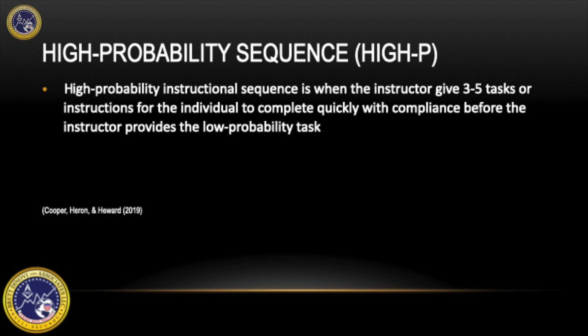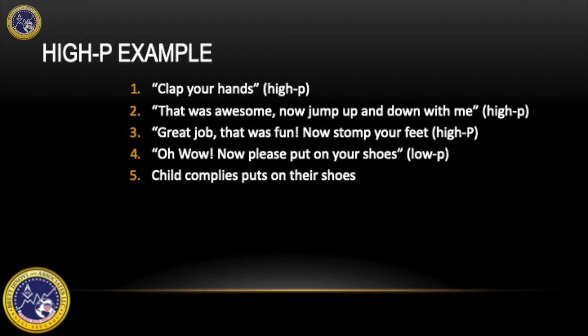For example, a parent tells their child to put their shoes on, which causes a full tantrum. So here's what the sequence can look like. Clap your hands — that was awesome. Now jump up and down with me — great job. Now stomp your feet — oh wow. Now please put on your shoes, which is the low probability behavior. The child complies and puts on their shoes.